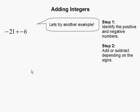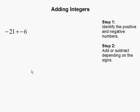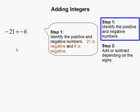Let's try another example. So here we have negative 21, and that's our negative number, plus negative 6, and negative 6 is our other negative number.